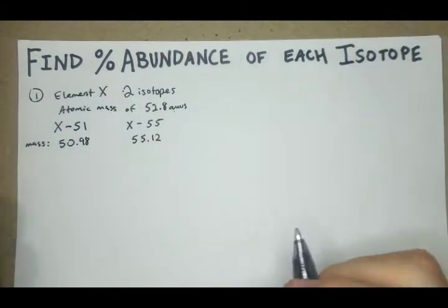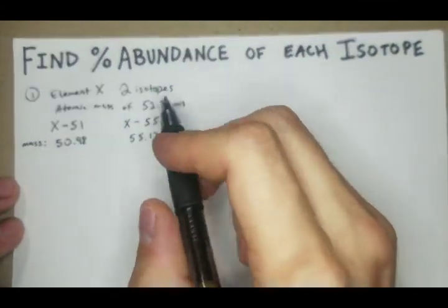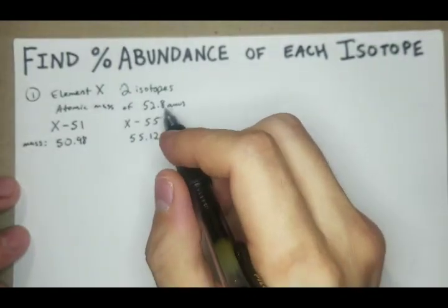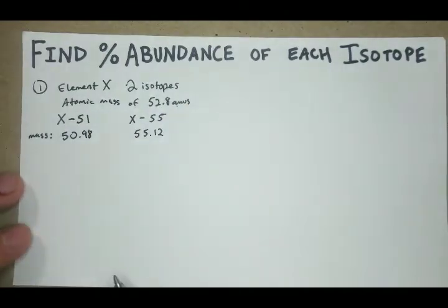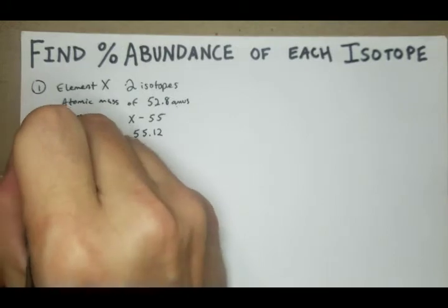The way that we're going to work this out is start off the equation with this number, the actual atomic mass of the element. So in this case, we have 52.8.